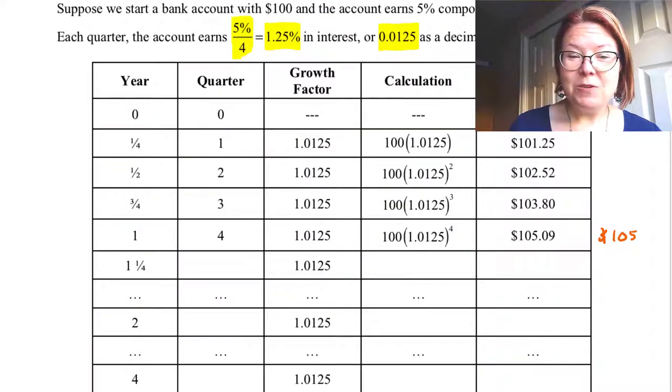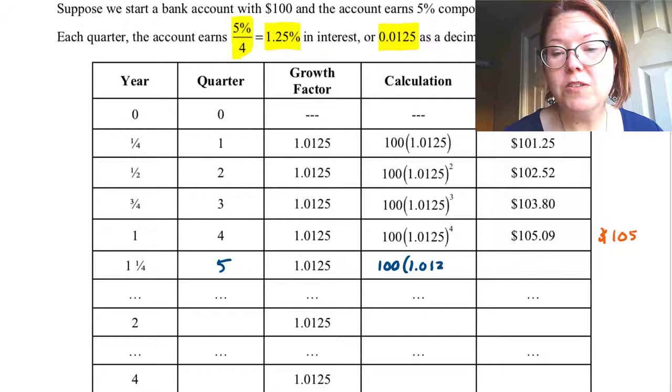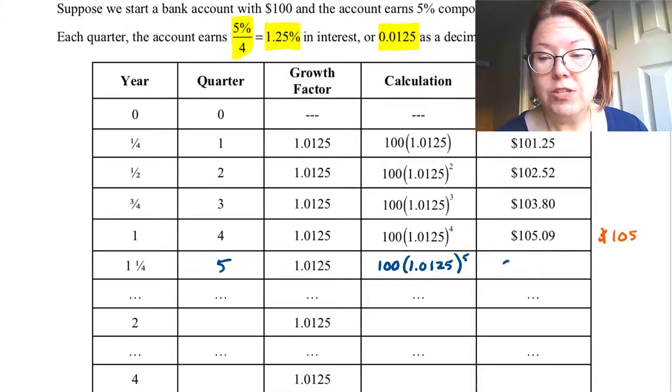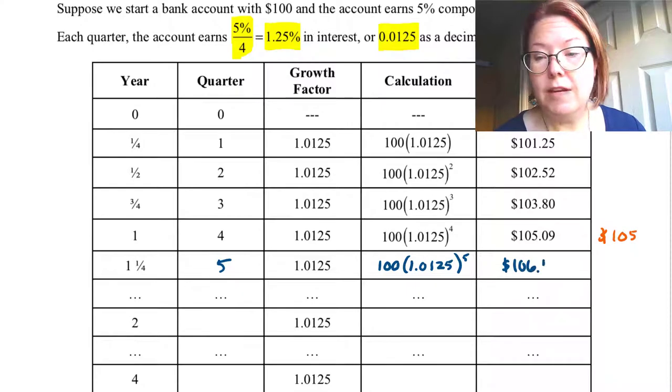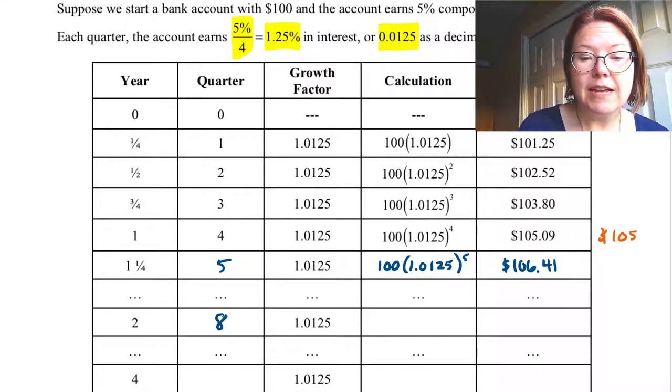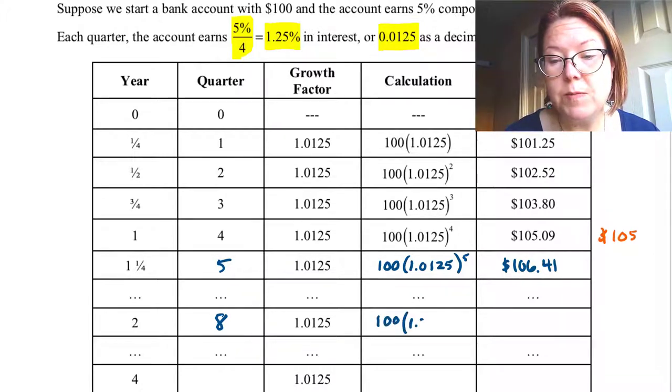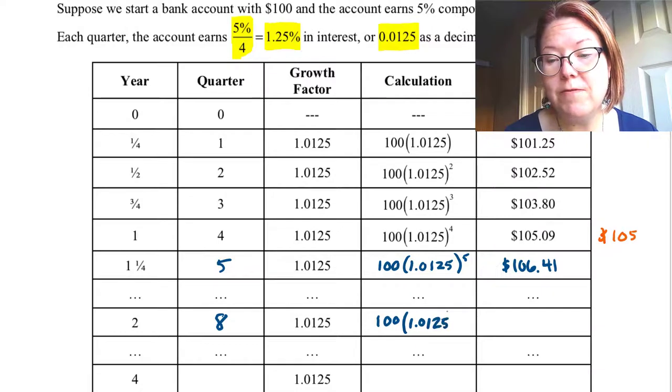Year 1.25 is quarter five, and so our calculation would be 100 times (1.0125) to the fifth power, which is $106.41. Year two is actually quarter eight. The calculation there would be 100 times (1.0125) to the eighth power.